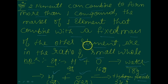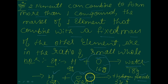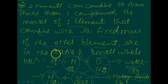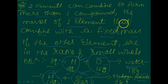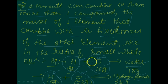The masses of one element — consider oxygen — which is 16 grams in water and 32 grams in hydrogen peroxide. These combine with a fixed mass of hydrogen, which is 2 grams in both cases. So the ratio of oxygen masses is 16 to 32, which gives a simple ratio of 1 to 2. This is the Law of Multiple Proportions.